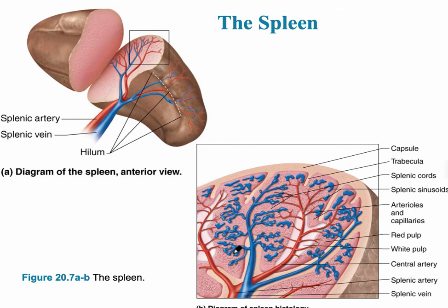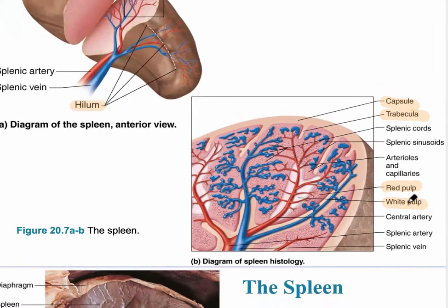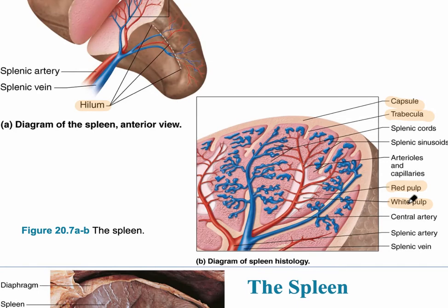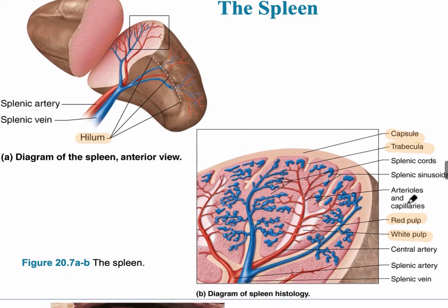This image shows what the spleen looks like. You can see there's a splenic artery and a splenic vein, both located at the hilum. In this zoomed-in image, we can see the outer capsule, the trabeculae, the red pulp, and the white pulp. You should be able to identify those two different types of pulp histologically in your lab.